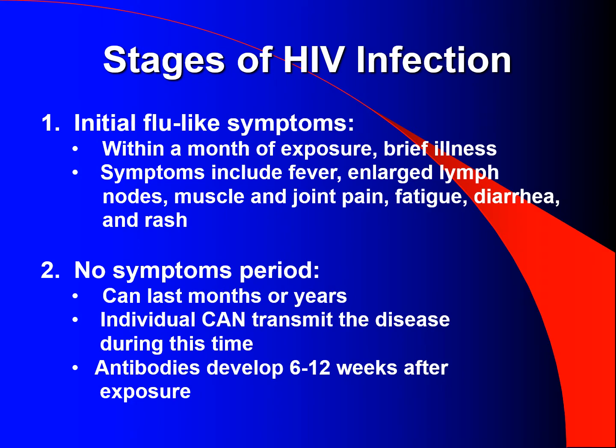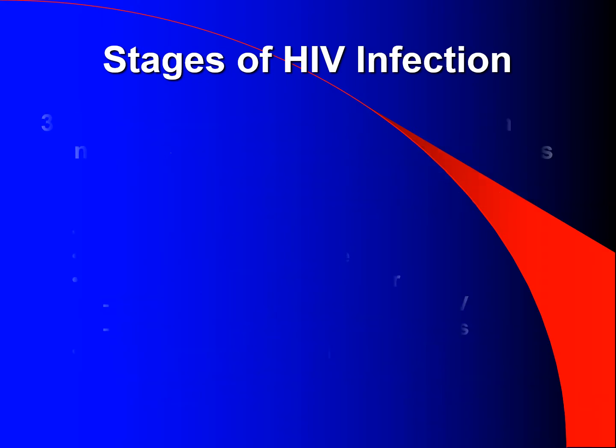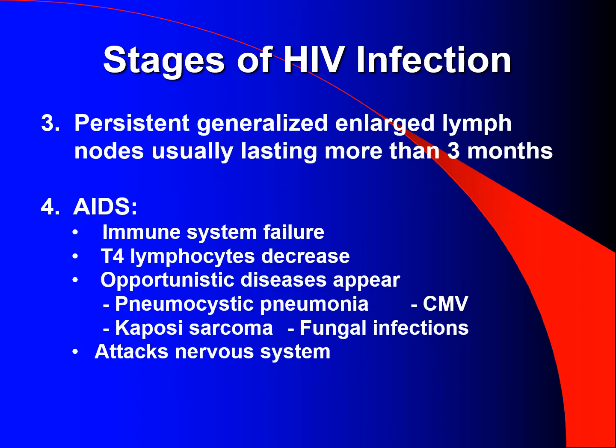Antibodies develop 6–12 weeks after exposure. Stage 3: Persistent, generalized, enlarged lymph nodes usually lasting more than 3 months. Stage 4: AIDS — immune system failure. T4 lymphocytes decrease, opportunistic disease appears, and HIV attacks the nervous system.